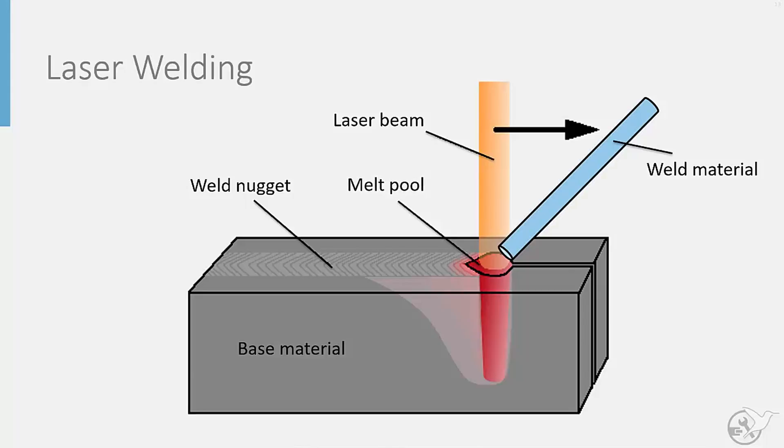As the laser beam and filler rod travel along the joint, the material in the melt pool solidifies and cools. As can be seen in the image, the power and intensity of the laser can allow for relatively deep penetration of the melt pool into the base material, allowing for deep welds without the need for creating a notch in the material to be joined.